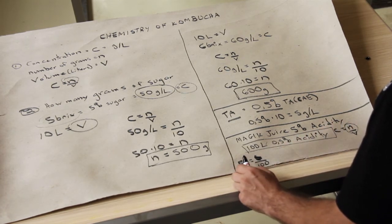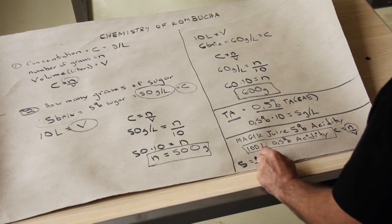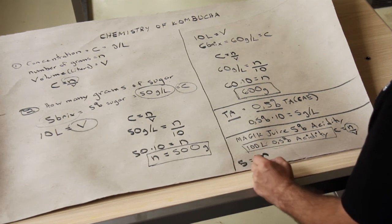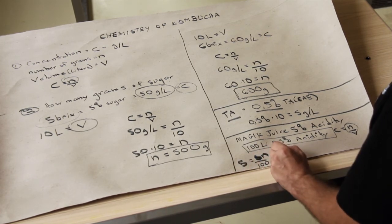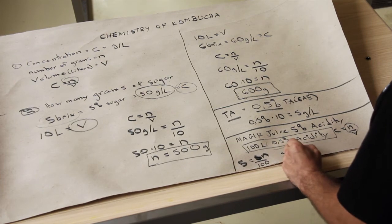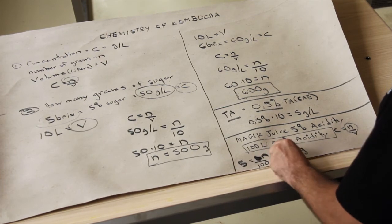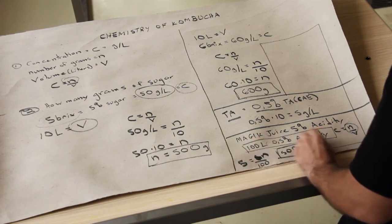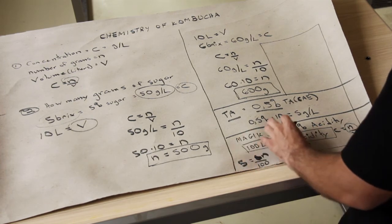So C is 5 grams per liter, V is 100, and N is what we're looking for. So in that case we can solve. So 5 times 100 is 500 grams of acidity. Now, how much magic juice do we need to have these 500 grams?